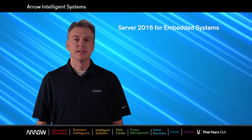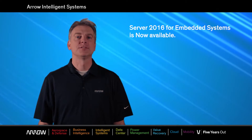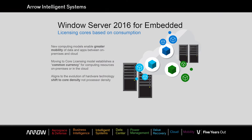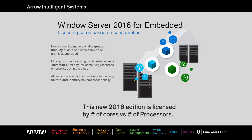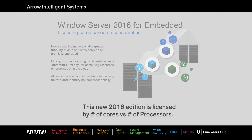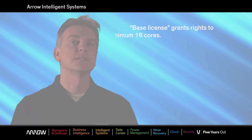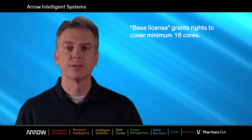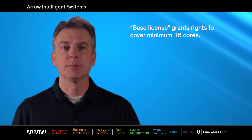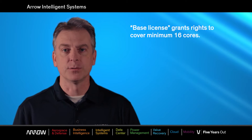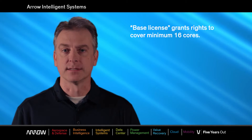Server 2016 for embedded systems is available as of January 2017. This is a quick overview of Server 2016 licensing changes. This new 2016 edition is now licensed by cores versus number of processors previously licensed on 2012 and older editions. A base license grants rights to cover up to 16 cores and will be priced about the same as the previous Server 2012 R2 for embedded systems with two processors and two VMs.